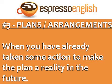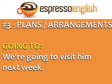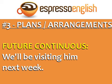Now let's talk about plans and arrangements. Plans and arrangements are when you have already taken some action to make the plan a reality in the future. There are three possible tenses to use: going to, present continuous, or future continuous. For example, you can say 'we're going to visit him next week,' or using the present continuous, 'we're visiting him next week,' or using the future continuous, 'we'll be visiting him next week.'